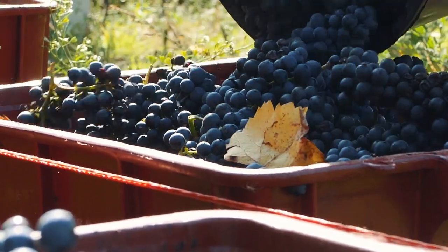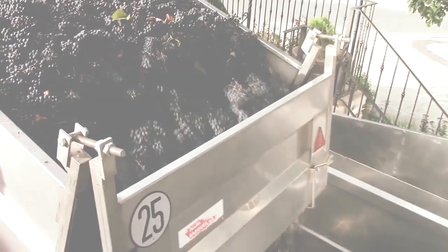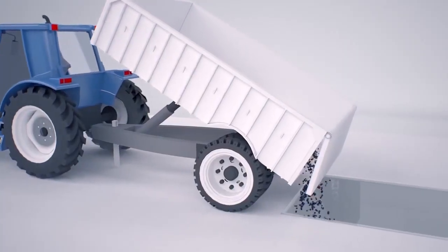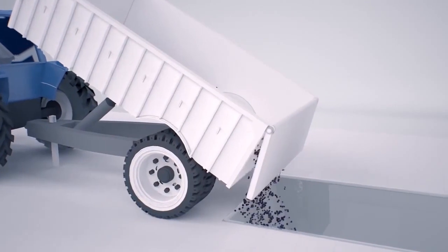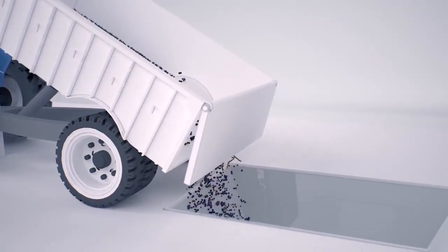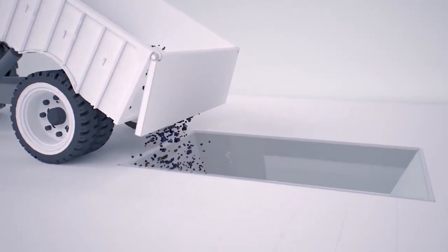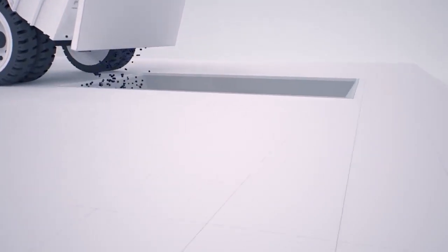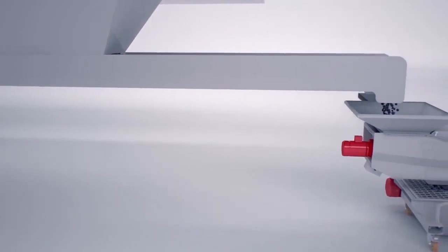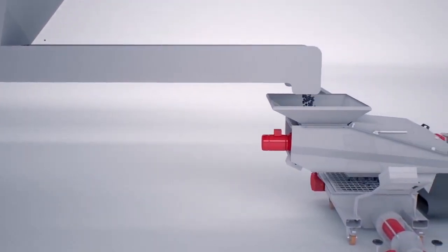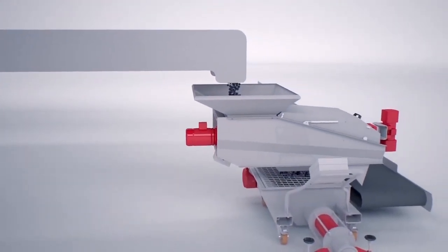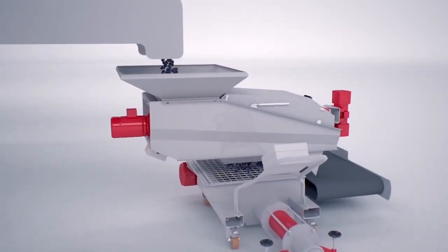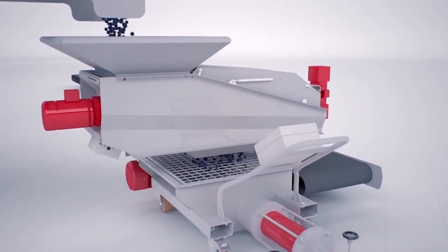After the grape reception, the first process in the wine cellar is normally the de-stemming and crushing of the grapes. The stems are separated from the grapes, and then the grapes are gently crushed, allowing the extraction of the must.